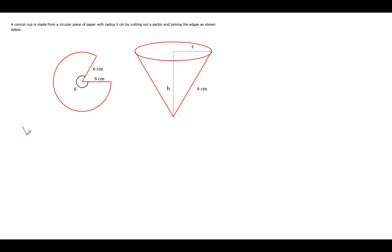We are to find the volume of this cone relative to the angle theta. In other words, we are to find a function for the volume where theta is the independent variable. Theta is this angle inside this circular piece of paper that has had this sector cut out.